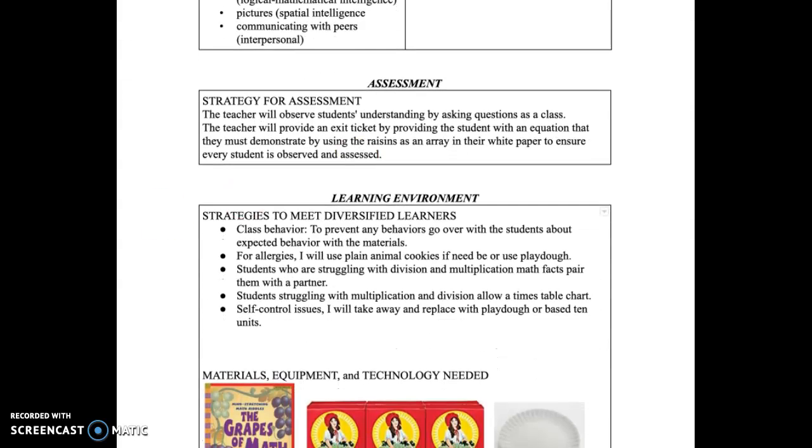The assessment for this lesson will be that teachers will observe students' understanding by asking questions as a class. The teacher will provide an exit ticket by providing the students with an equation that they must demonstrate by using the raisins as an array in their white paper to ensure every student is observed and assessed.